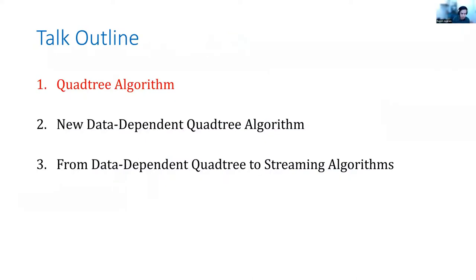Now I'll give an outline for the rest of the talk. We'll focus on three steps: first, defining the quadtree algorithm as a method to obtain approximations to EarthMover Distance fast and in a stream; then introducing a new data-dependent quadtree algorithm, one of the main contributions of this work; and finally showing how we go from that new algorithm to a streaming algorithm.